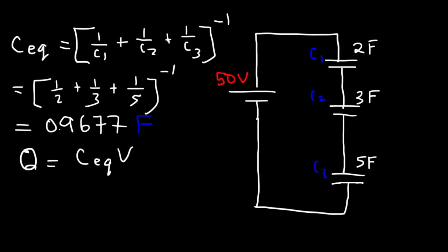So once we find Q, this Q will be the same as Q1, Q2, Q3. They all equal each other. And this will be very helpful in calculating V1, V2, and V3. So let's find Q. It's equal to the equivalent capacitance times the total voltage, or the voltage of the battery, which is 50 volts. So 0.9677 times 50, that's equal to 48.39, and that's a rounded answer. So that's the total charge, which is the charge on each capacitor, which are the same.